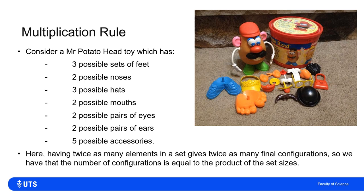Overall, for each new category I need exactly one item from: if there are two items in that category, I double the number of options — I could have option one or option two. If there are three, I have three times as many. So in this case, I simply take the product of how many choices I have in each category. For this Mr. Potato Head problem, that's three feet times two noses times three hats times two mouths, and so on — giving 720 different configurations.